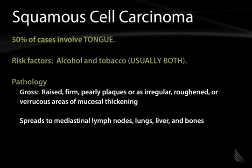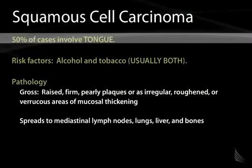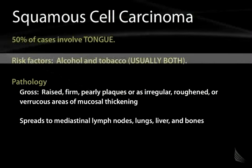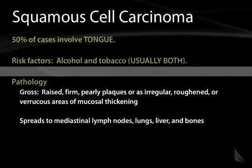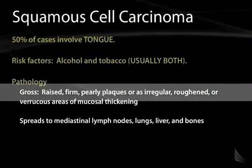This brings us to the major tumor of the oral cavity: squamous cell carcinoma. The primary area affected in most cases is the tongue, making it an area to examine carefully during physical exam, particularly in patients with a long history of tobacco and/or alcohol use. The pathology tends to present as areas of raised, firm, sometimes pearly-appearing plaques, or as areas of irregular roughening or verrucous, papillary-appearing areas of mucosal thickening.